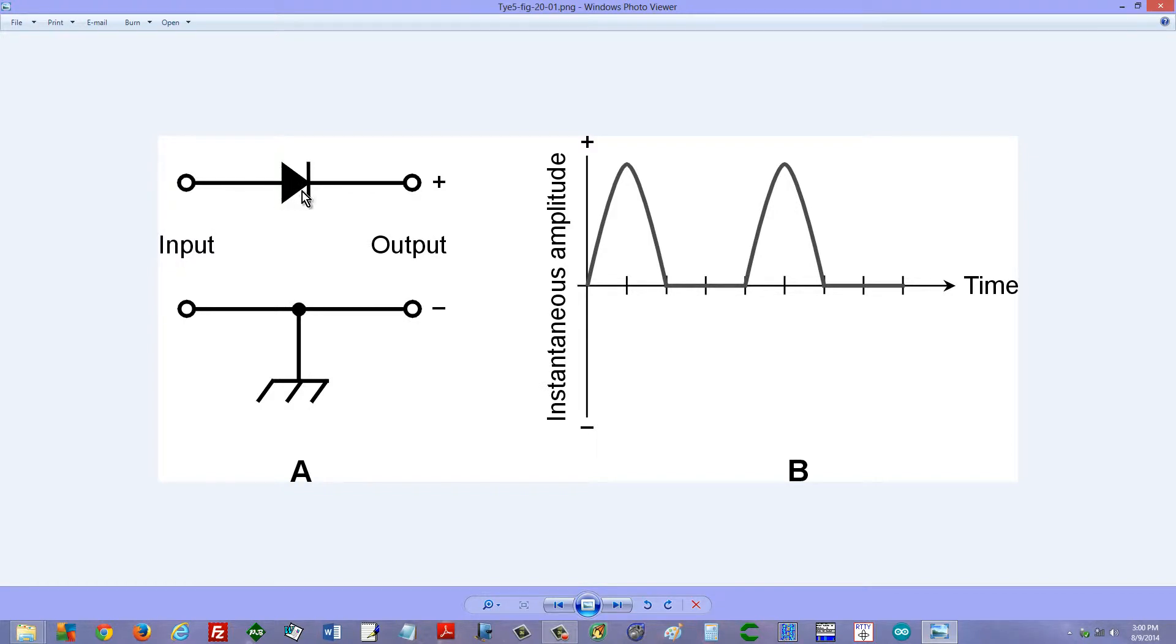Here we have the circuit. It's just a diode in the hot line of the AC utility. Input is alternating current and the output looks like this, pulsating direct current.